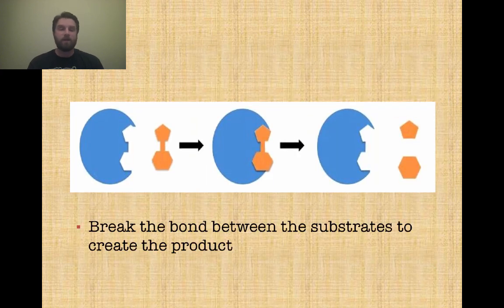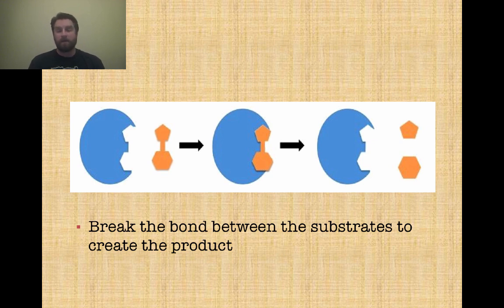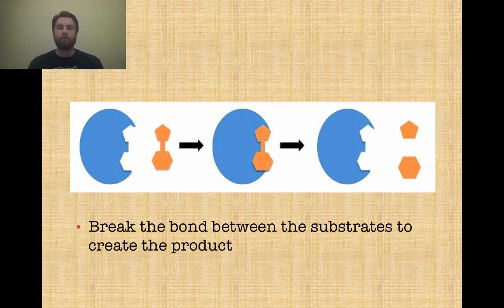In addition to enzymes promoting the making of a bond to create a new product, they can also break the bond between substrates to create a product. The substrate or reactant — some molecule that is bonded together — can bind to the enzyme, undergo the chemical reaction, and come out as something different. It doesn't always have to be two things making one thing or one substrate making two products — it can be any of those, as long as a new product is formed. And again, the enzyme doesn't change at all; it helps the reaction go faster and itself is not used up.